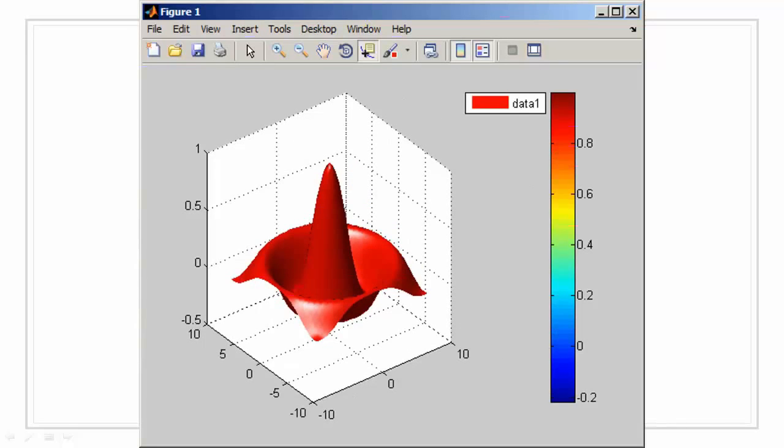We can insert a color bar, if a color mapping has been enabled. We can even insert a legend, if we have multiple data plots on the same graph.